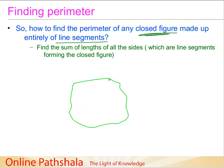One way to measure an irregular boundary is to walk along it and measure the total length. Another way is to approximate it into line segments — trace the boundary as closely as possible with straight line segments, then measure each segment's length. That covers several examples of finding perimeter — see you in the next session.